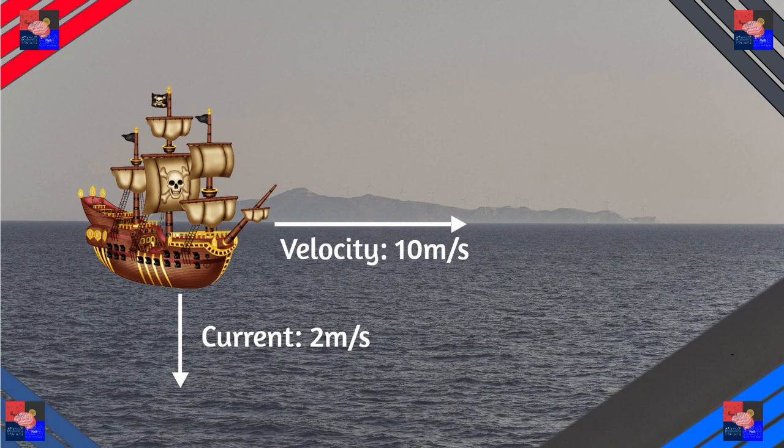You are moving at the speed of 10 meters per second, but the current is 2 meters per second. Which way will the direction go? We simply add the vectors.